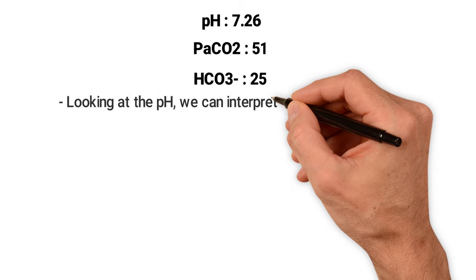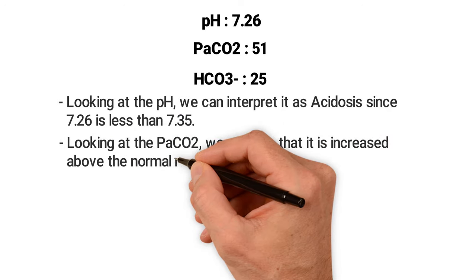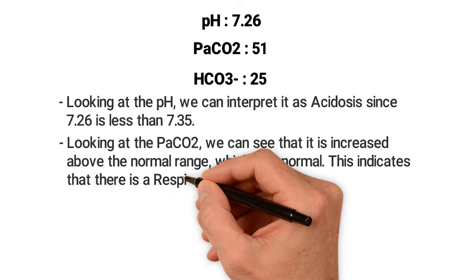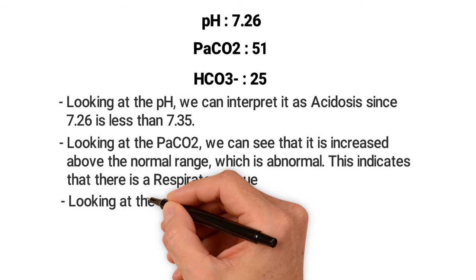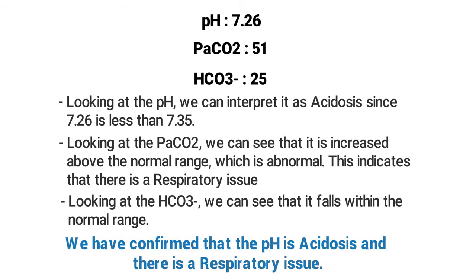Let's say the pH is 7.26, the carbon dioxide is 51, and the bicarb is 25. How can we interpret this ABG? Looking at the pH, we can see that this is acidosis, since 7.26 is less than 7.35. Looking at the PaCO2, we can see that it is elevated above the normal range, which is abnormal — this indicates that there is a respiratory issue. And looking at the bicarb, we can see that it falls within the normal range, which also helps confirm that there is a respiratory issue. So, this ABG can be interpreted as respiratory acidosis.